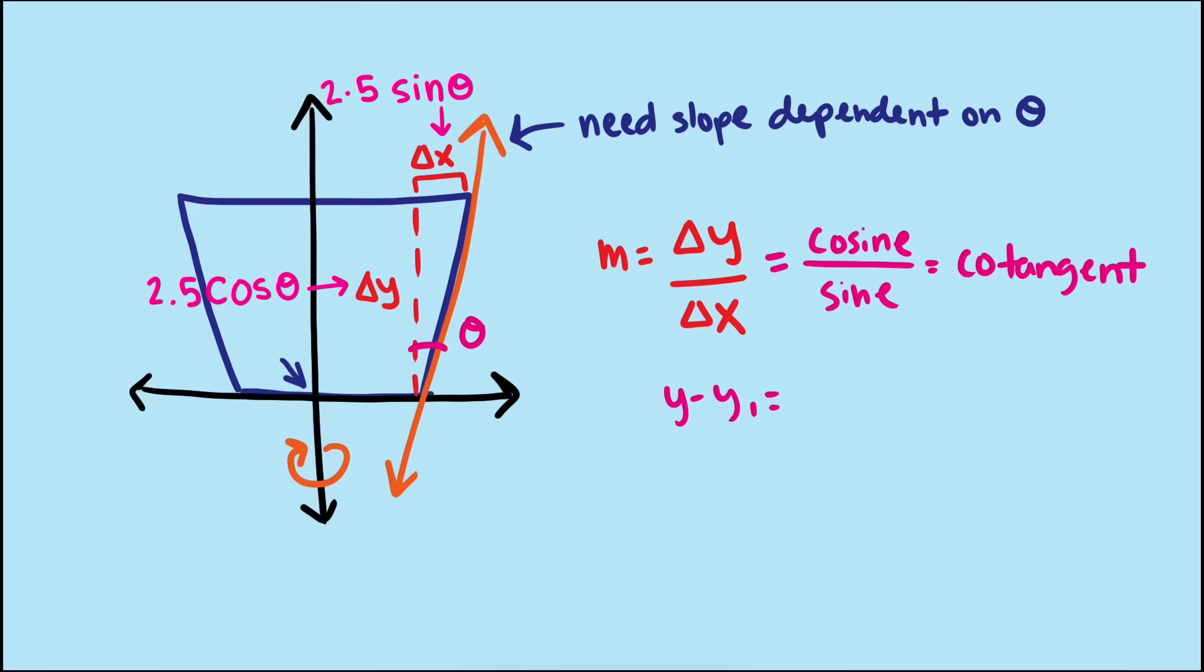Now that we have the slope, we can use the point-slope formula with this point, 1.5 comma 0, to get the equation of the line y equals cotangent of theta times quantity x minus 1.5.